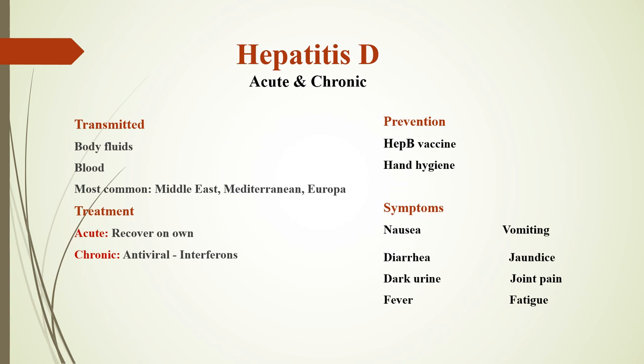Hepatitis D can be acute or chronic. It is most common in the Middle East, Mediterranean, or Europe, and is not common in the United States. It is transmitted by blood or body fluids. The treatment, if acute, is recovery on your own; if chronic, antiviral and interferon. The prevention for hepatitis D is the hepatitis B vaccine and hand hygiene.